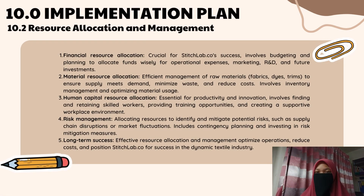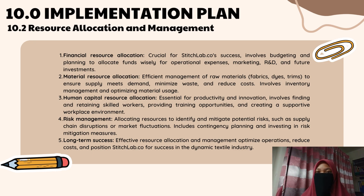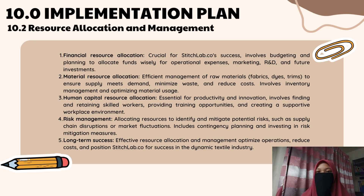I will explain resource allocation and management. In StitchLab.co's journey to success, resource allocation is key. Financial resource allocation involves budgeting wisely for operational expenses, marketing, R&D, and future investments. Material resource allocation efficiently manages raw materials to meet demand, minimize waste, and reduce costs. Human capital resource allocation focuses on finding and retaining skilled workers, providing training, and creating a supportive workplace. Risk management allocates resources to identify and mitigate potential disruptions. Effective resource allocation optimizes operations, lowers costs, and ensures long-term success.